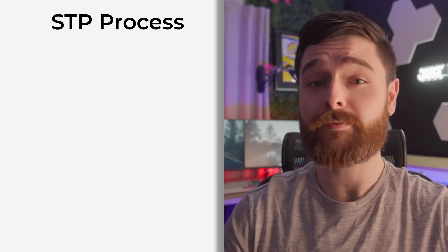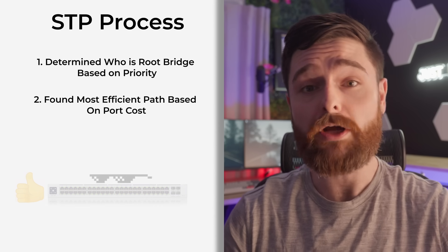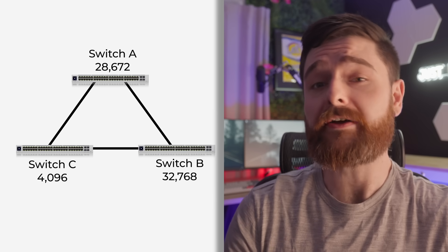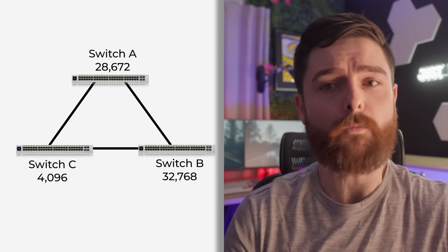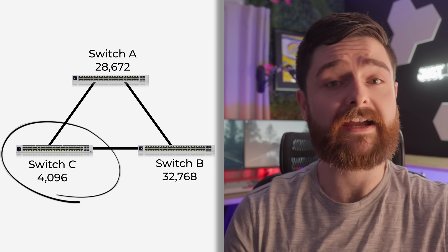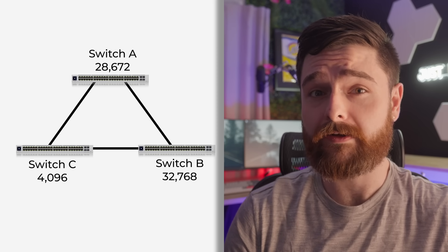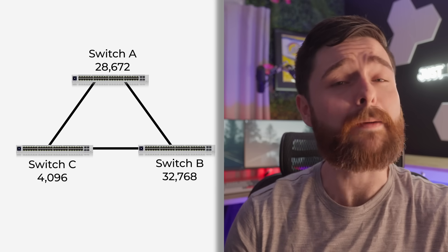Once that's all done, the switch has determined who the root bridge is and the most efficient path to get back to it, and it's going to automatically know where to place this block. Let's run through a quick real-world example. To keep this simple, we're back to three switches. The priority values are shown on the screen. Which switch do you think will be considered the root bridge? It should be the one with 4096 because it has the lowest priority. With that, the STP block is going to appear between switch B and A, assuming port costs are all the same — say, all one gig connections. That right there is the basic principle of STP.